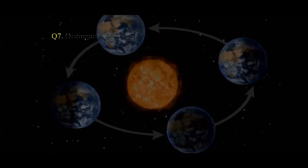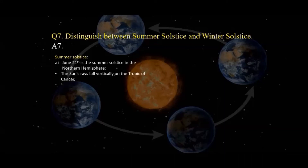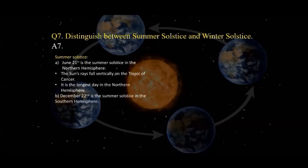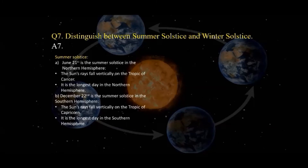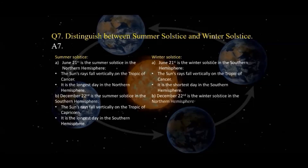Distinguish between summer solstice and winter solstice. June 21st is the summer solstice in the northern hemisphere — the Sun's rays fall vertically on the Tropic of Cancer, and it is the longest day in the northern hemisphere. December 22nd is the summer solstice in the southern hemisphere — the Sun's rays fall vertically on the Tropic of Capricorn, and it is the longest day in the southern hemisphere. June 21st is the winter solstice in the southern hemisphere — the shortest day there. December 22nd is the winter solstice in the northern hemisphere — the Sun's rays fall vertically on the Tropic of Capricorn, and it is the shortest day in the northern hemisphere.